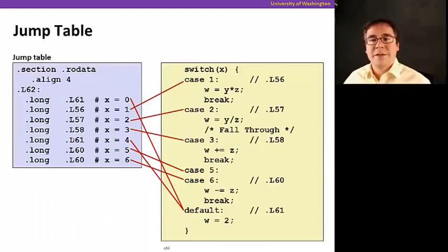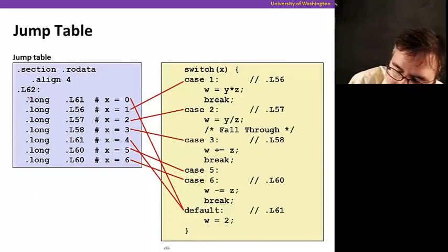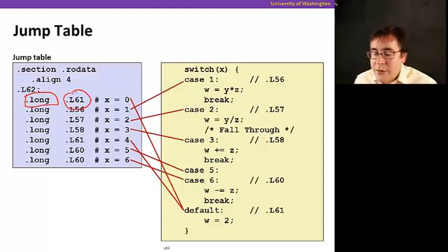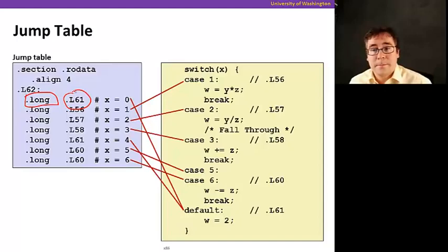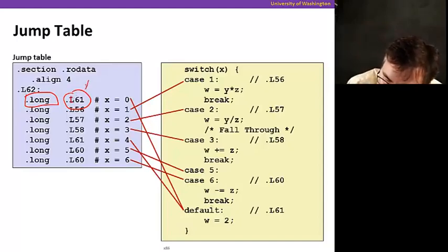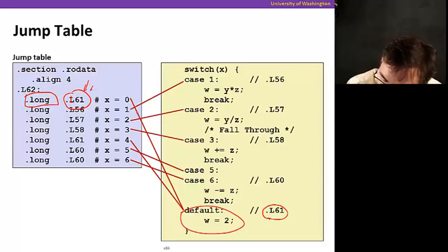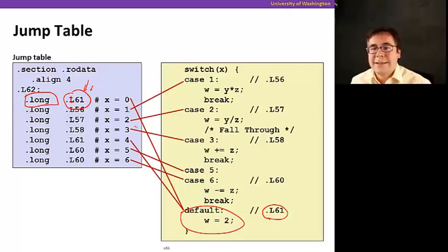This jump table is just a list of addresses, and here's how it gets set up. In assembly, you'd see a declaration of a long word that happens to be the same value as the label that maps to the address of the code block. So for example, if we take .l61, that's where the default code block starts, and the corresponding instruction address is going to be stored there — same thing for the other case values. Let's see how we use this table in assembly now.